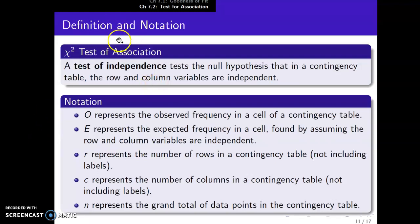Alright, so the chi-squared test of association—this is also called a test of independence. So if you look at another stats book or other research papers or whatnot, you might see a test for independence. Our book calls it association, but it tests the null hypothesis that in a contingency table the row and column variables are independent. So you assume no association. Notice the notation here similar to the goodness of fit: O is the observed frequencies, E is the expected frequencies, and you're assuming the row and column variables are independent. R represents the number of rows in a contingency table, not including labels, and C is the number of columns, not including the labels. So these are the number of categories in each variable. And N is the grand total of all the data points.